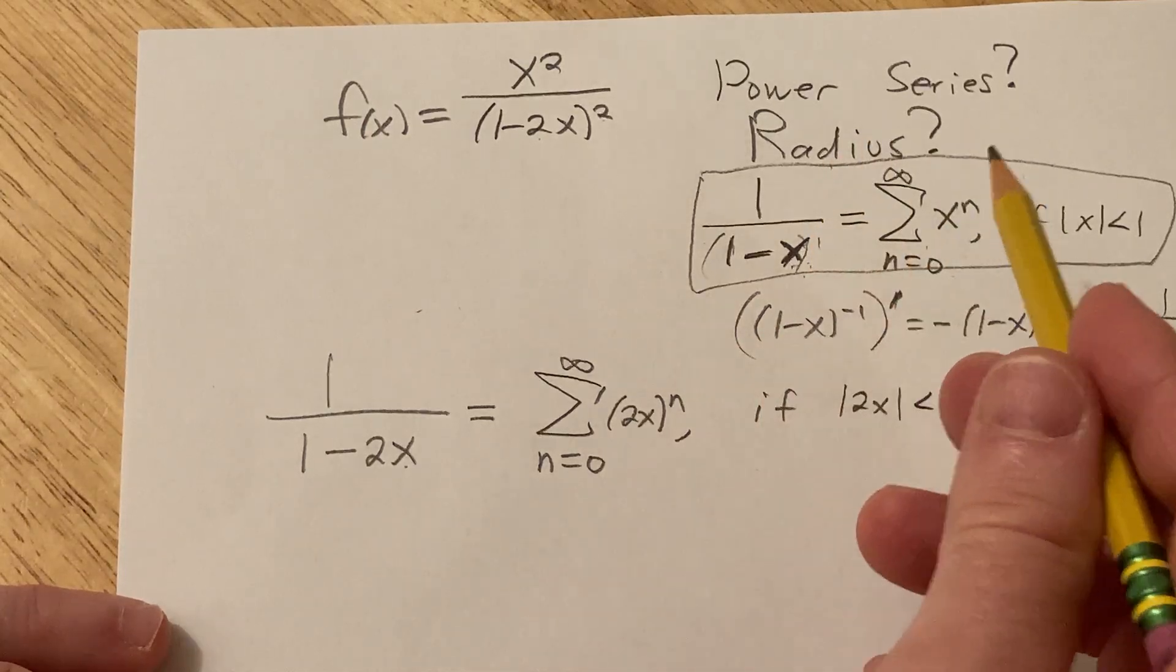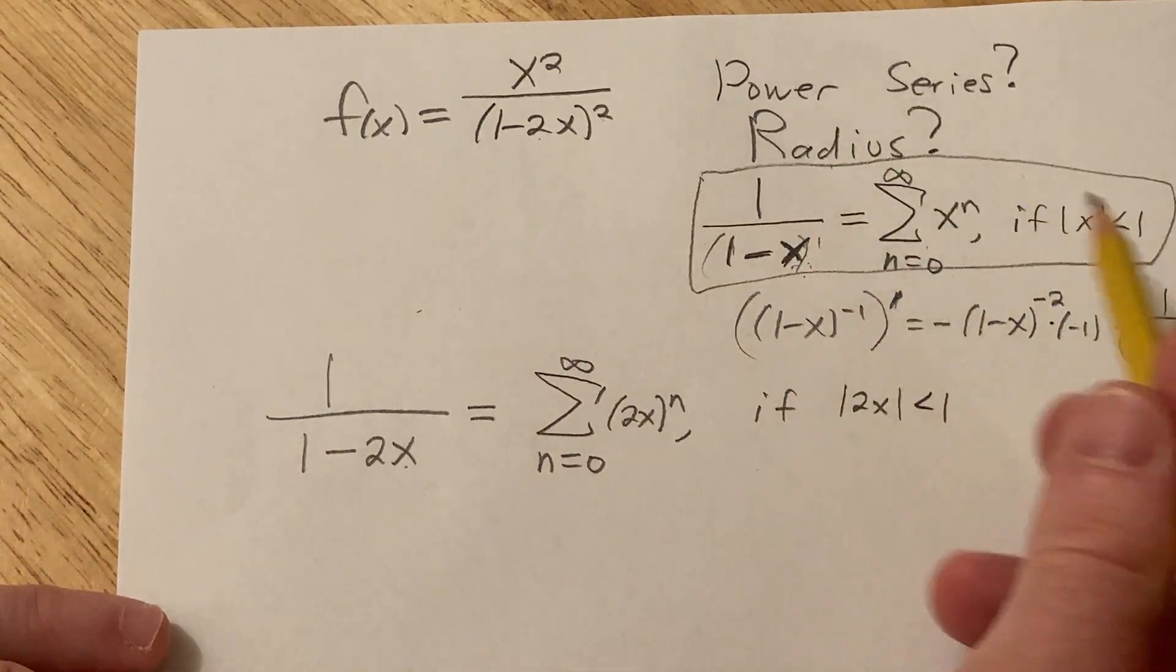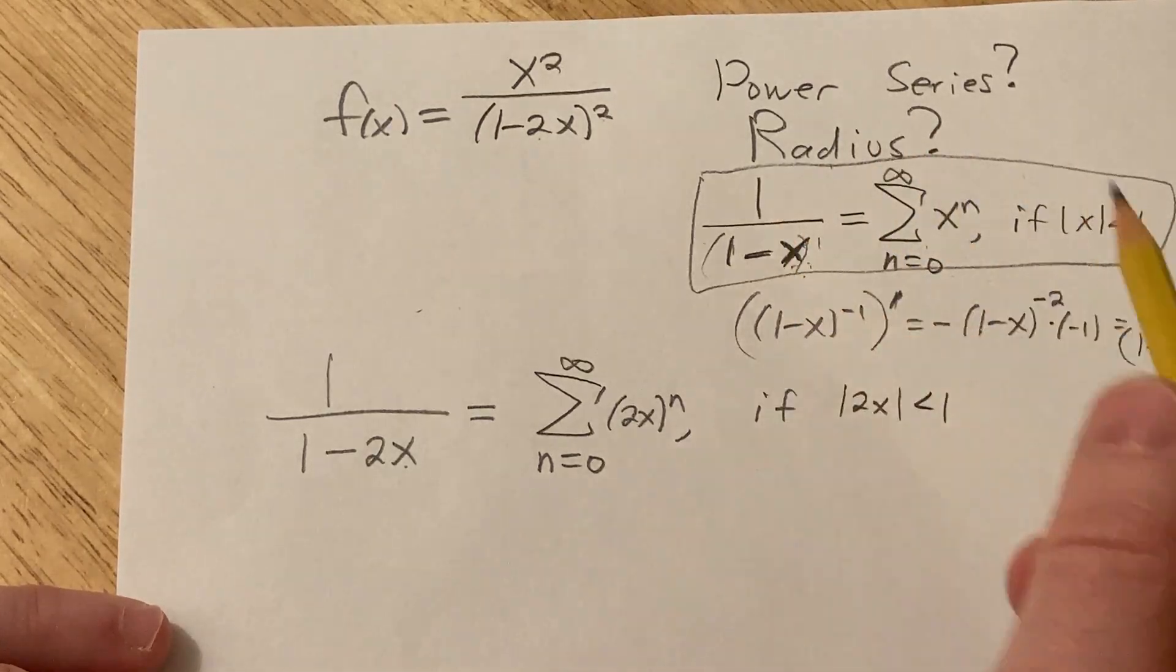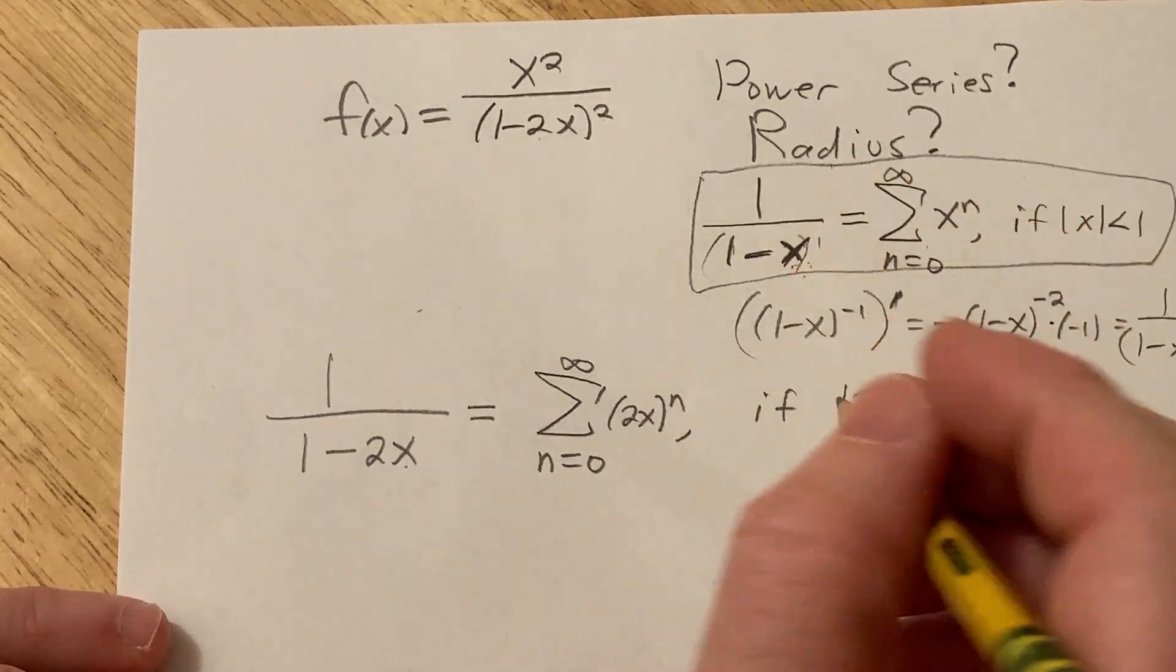The only thing that can possibly change is convergence at endpoints. If you differentiate, you might lose convergence at endpoints, but you'll never gain it. If you integrate, you might gain convergence at endpoints, but you'll never lose it. Lots of extra knowledge, not relevant, but I thought I would say it anyways.